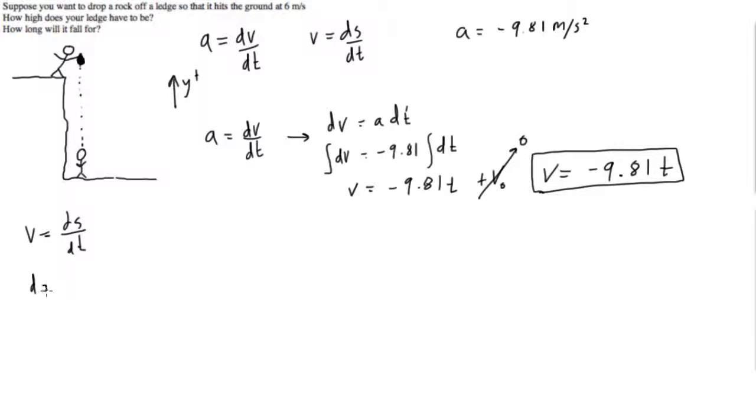We'll do separation of variables so we get ds is equal to v dt. So now we just want to integrate both sides.